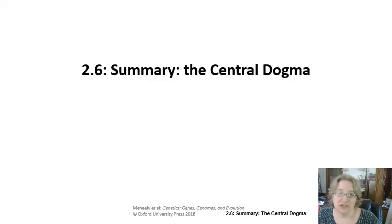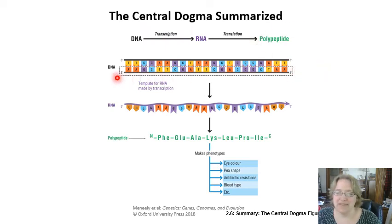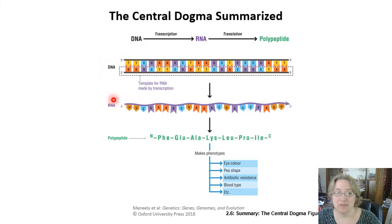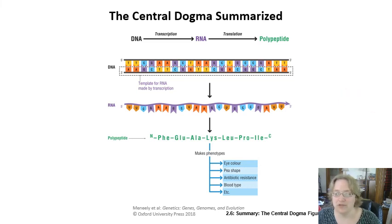To sum everything up: the central dogma is the idea that DNA information starts in DNA, gets transcribed to RNA, and is translated to a polypeptide. The template strand of the DNA is used to build the mRNA, which matches the coding strand — five-prime to three-prime — and that sequence matches the polypeptide, which then determines phenotype. Be really solid with this slide; this is what you should have brought with you from GenBio.